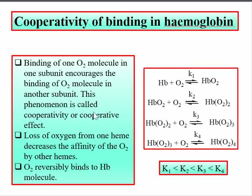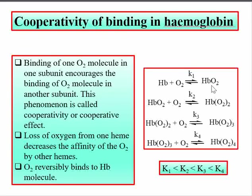As we go from one to four bound oxygen molecules, the equilibrium constant goes on increasing. The most stable compound among these is oxyhemoglobin with all four oxygen molecules bound.